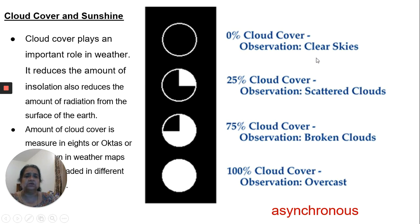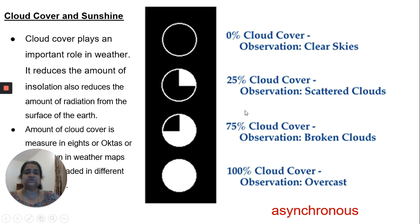There are types of cloud cover. Clear skies means no clouds at all. 25% cloud cover is scattered, 75% cloud cover is broken clouds. When clouds are too much and the sky is gray, you can observe that it is going to rain. Cloud cover is measured in eighths, or oktas, in weather reporting.